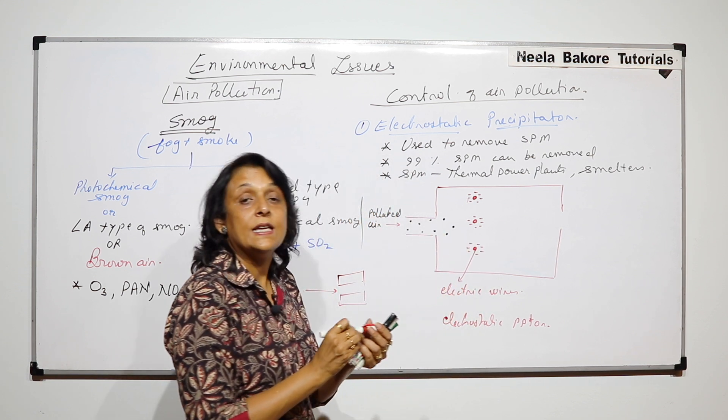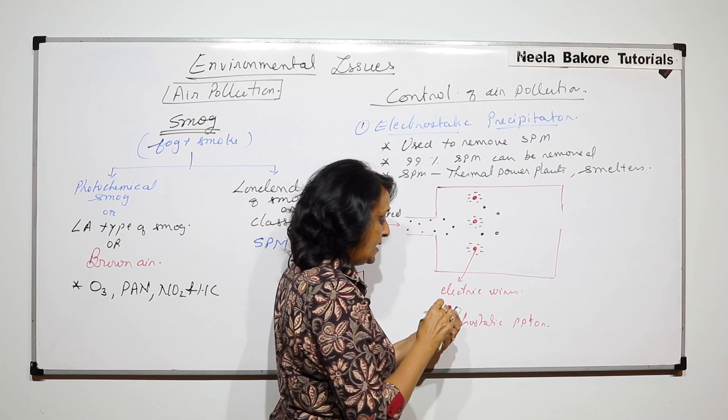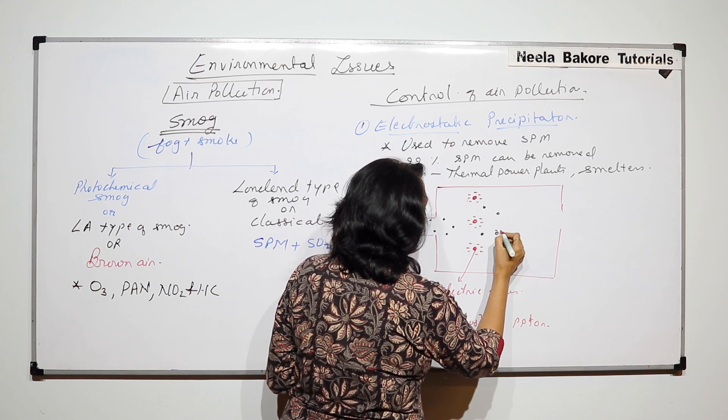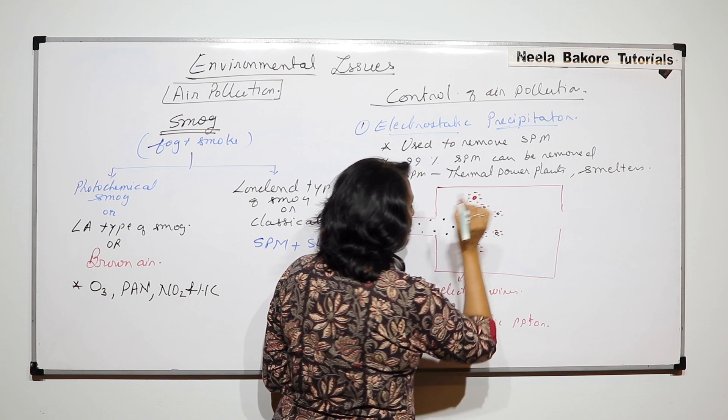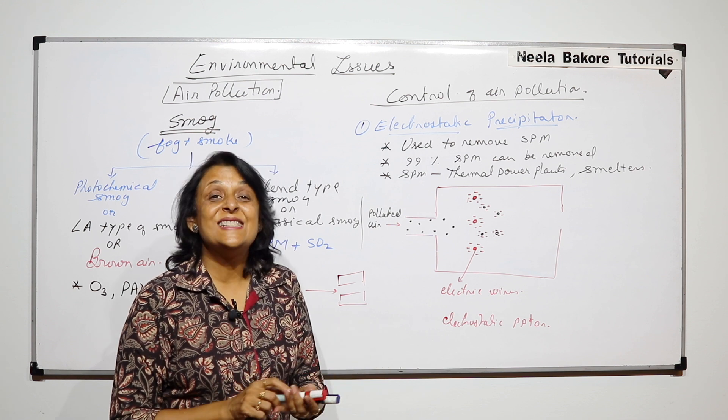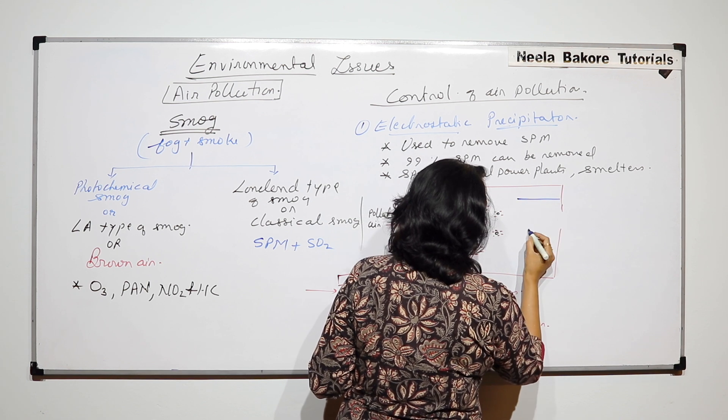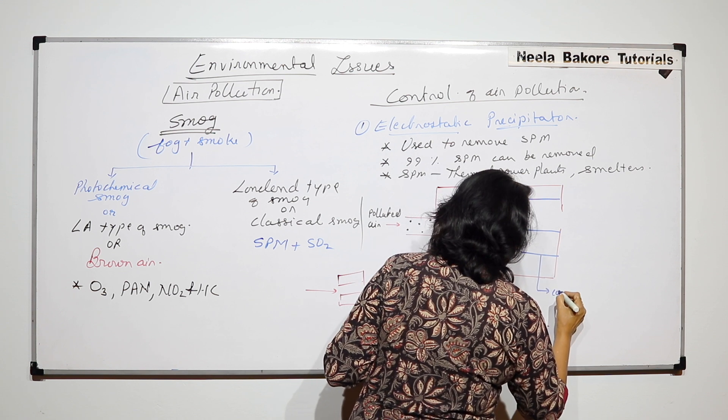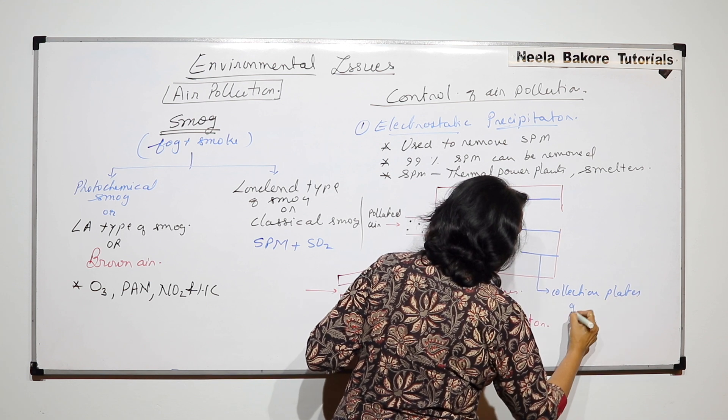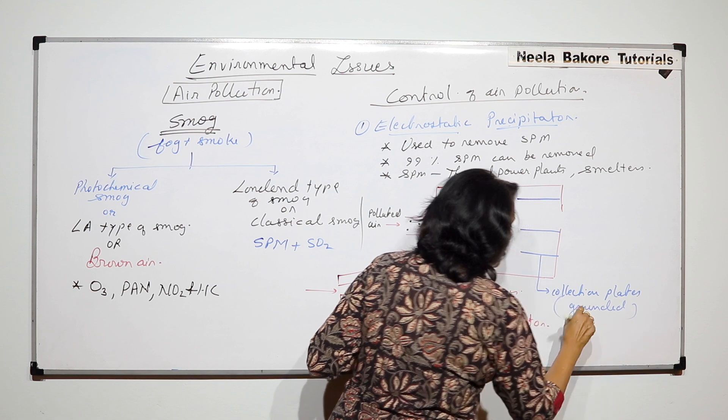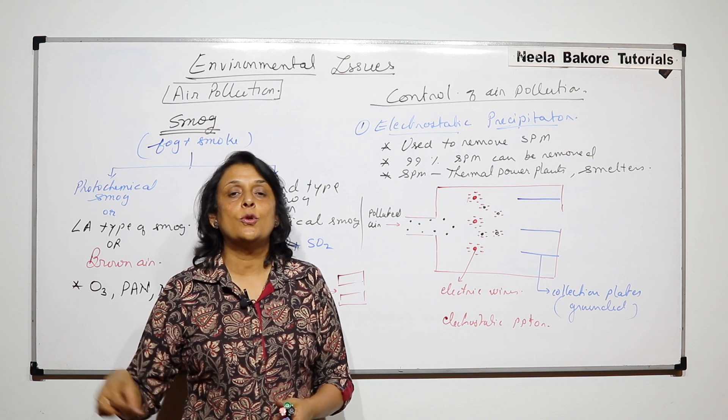And now when this dust or the suspended particulate matter passes through these wires, they also get negatively charged. The net charge on these dust particles is also negative. And now these charged dust particles will be passed through the collection plates. These collection plates are grounded so that the negative charge, the electrons which are received by these plates, would be passed on to the ground.